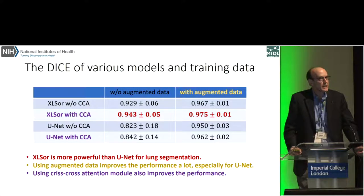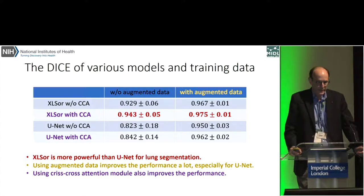We used three different datasets. One was the NIH Clinical Center chest radiograph dataset that's publicly available, and the other two publicly available datasets came from Montgomery County and the Japanese Society of Radiologists.